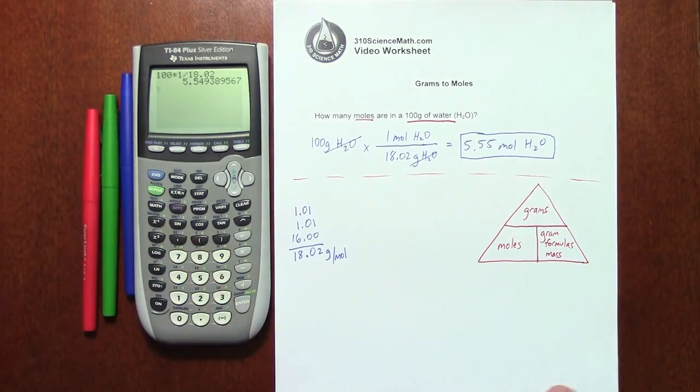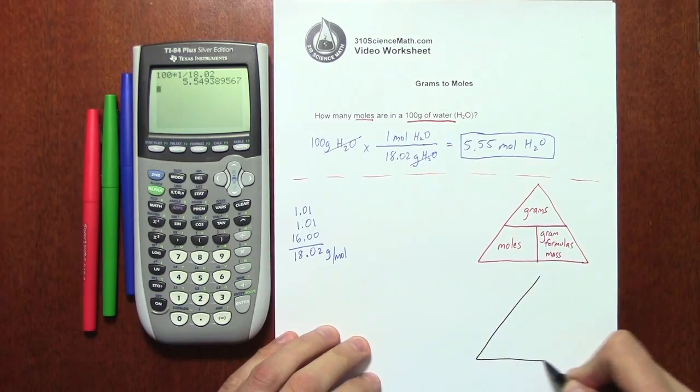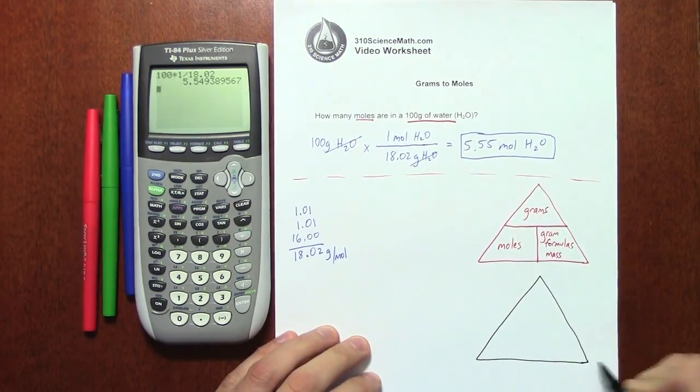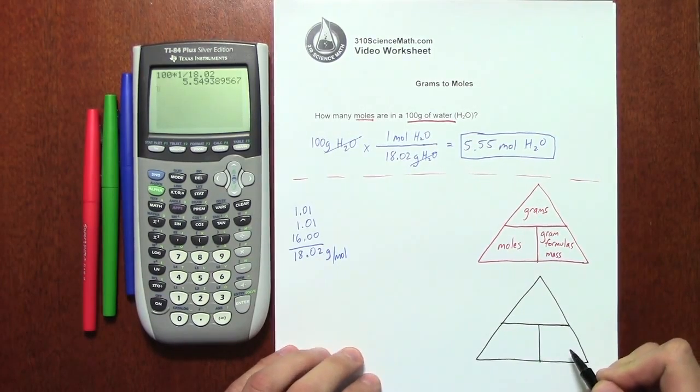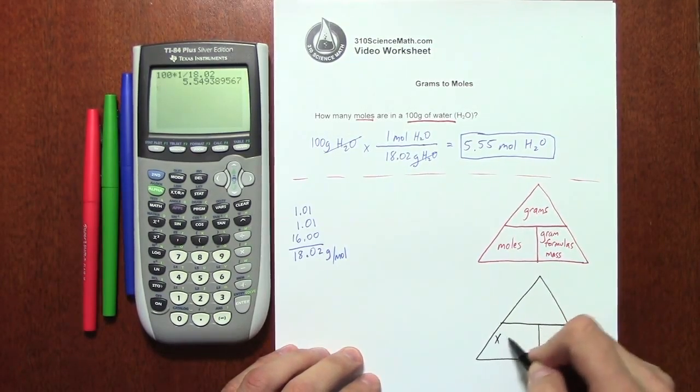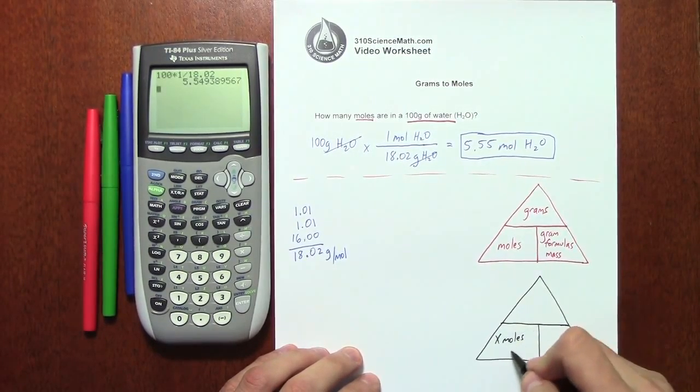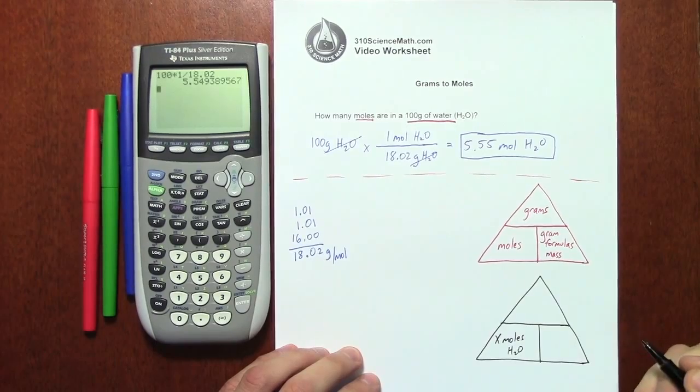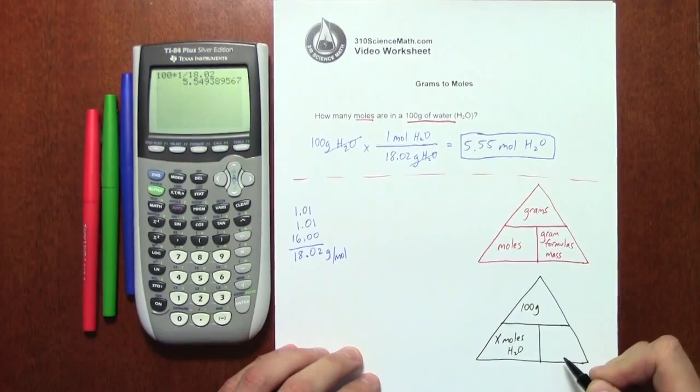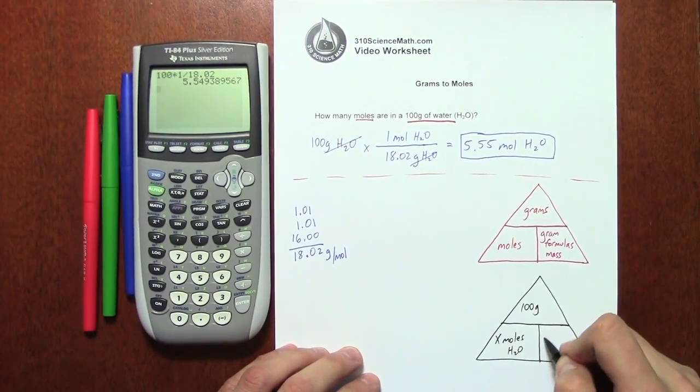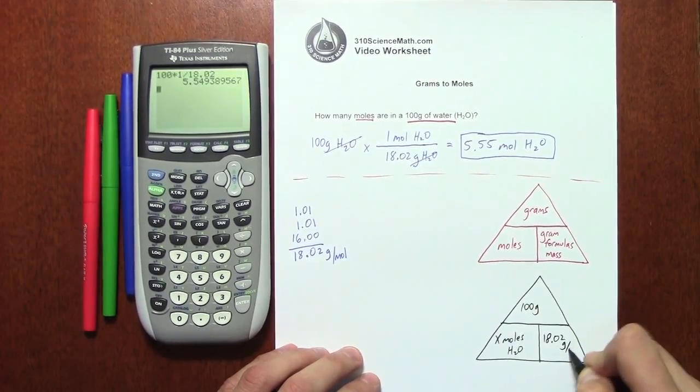Now how does this apply to our particular problem? Well, I'm going to draw another triangle right below it, and I'm going to fill it in with the information for our problem. So I'm looking for the moles. So it's important that you make that x. So in this case, it's x moles of water that we're looking for. Now we were given 100 grams. And we know the gram formula mass is 18.02 grams per mole.